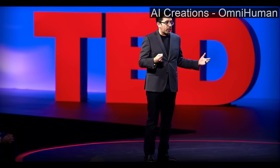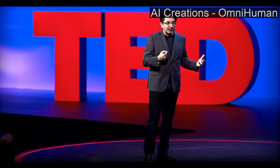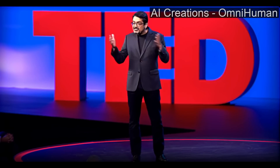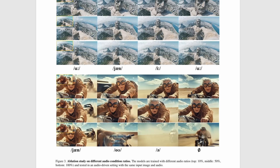For even more control, you can combine audio and video signals to animate specific body parts. This level of flexibility is unprecedented in human animation models. For example, you could use a video of someone dancing as the motion signal, and OmniHuman will generate a video of your chosen person performing the same dance. Or, you could combine audio and video to create a talking avatar that mimics both the speech and gestures of a real person.